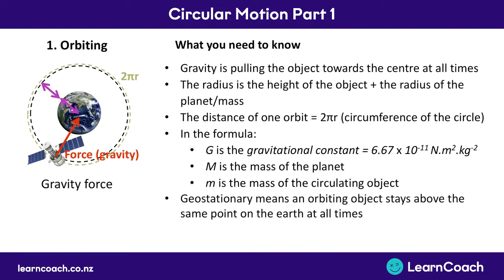Finally, we need to learn a new word: geostationary. It means an orbiting object — for example a satellite — stays above the same point on the Earth at all times. So if you're sitting in Auckland and you look up and there's a satellite, two hours later it's always going to be straight above you. That's what geostationary means.